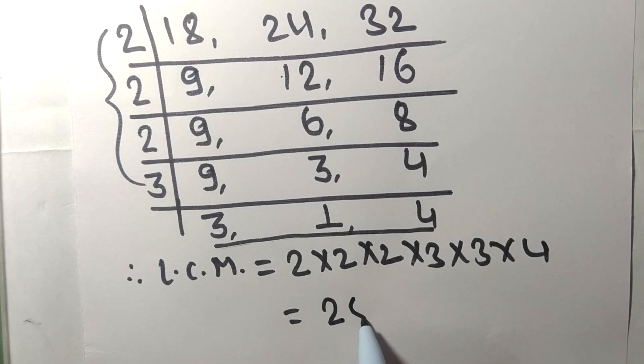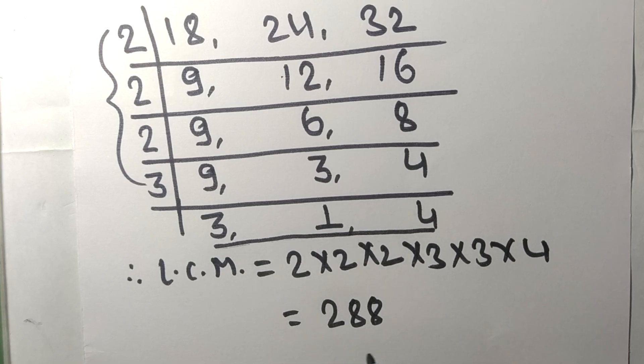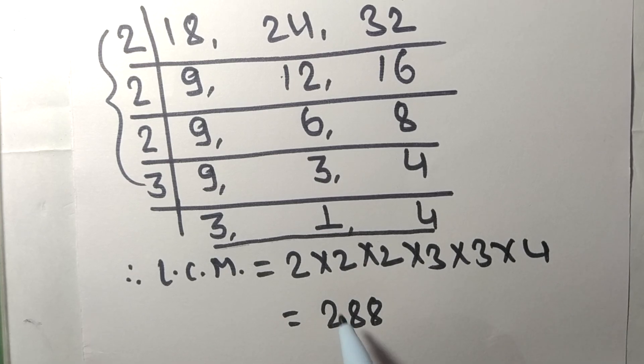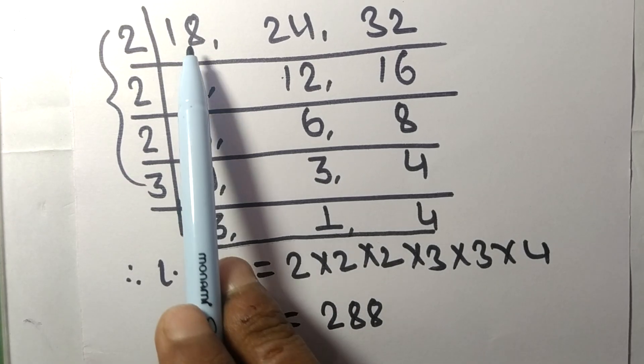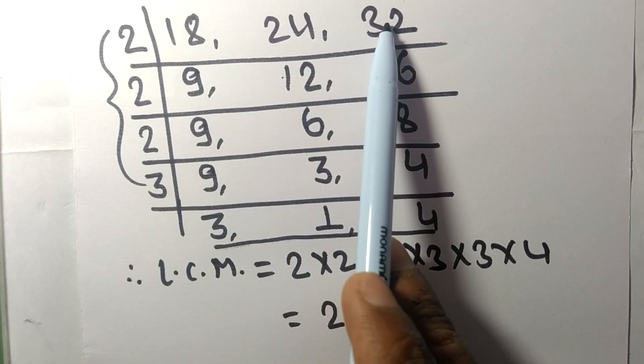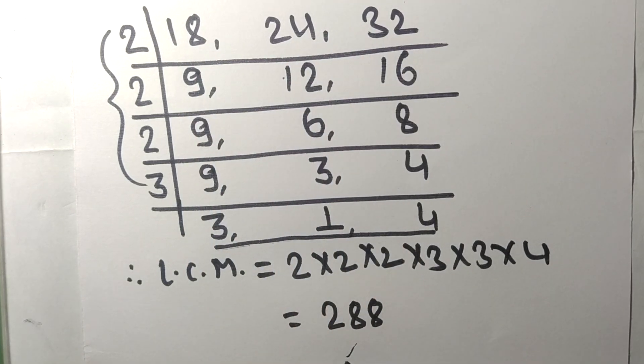So 288 is the LCM of 18, 24, and 32. That's all for today. Thanks for watching.